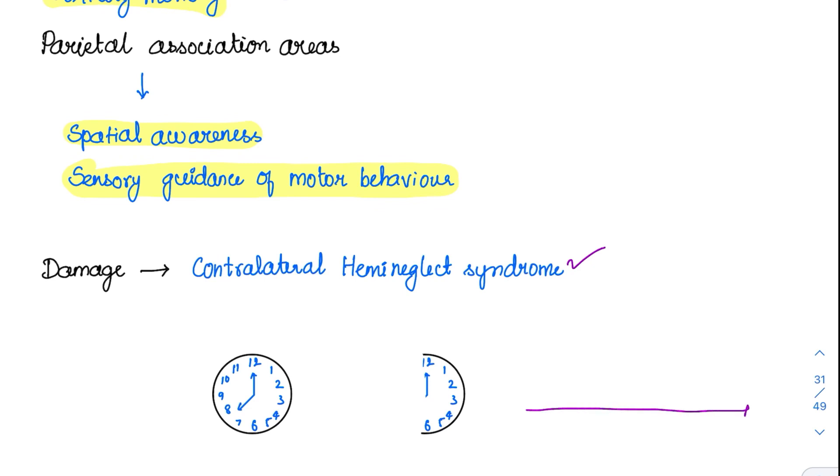There are several examples. Whenever the person is asked to bisect a line, suppose this line is there, whenever the person is asked to bisect, ideally we will be doing it here. But this person, for him, this half is completely gone. He doesn't recognize this half itself. He will consider this as the line and he will bisect it somewhere here. So this can happen. And the person will eat only half of his food in the plate, and he will be completely ignorant of his own body also. So this contralateral hemi-neglect syndrome is very specific for parietal association area lesion. And parietal is the area where the somatosensory association is also located.